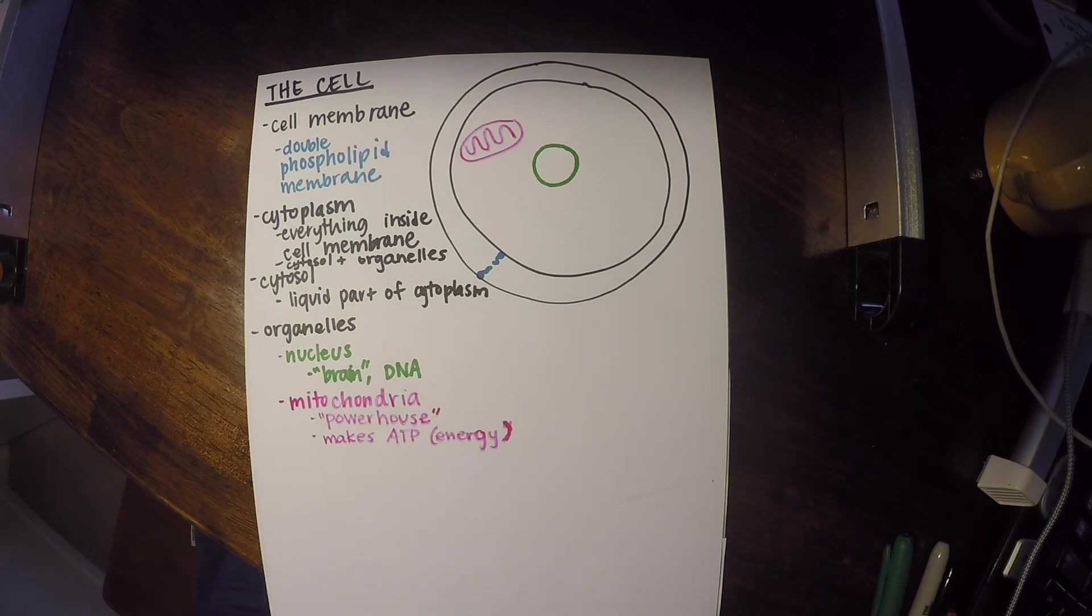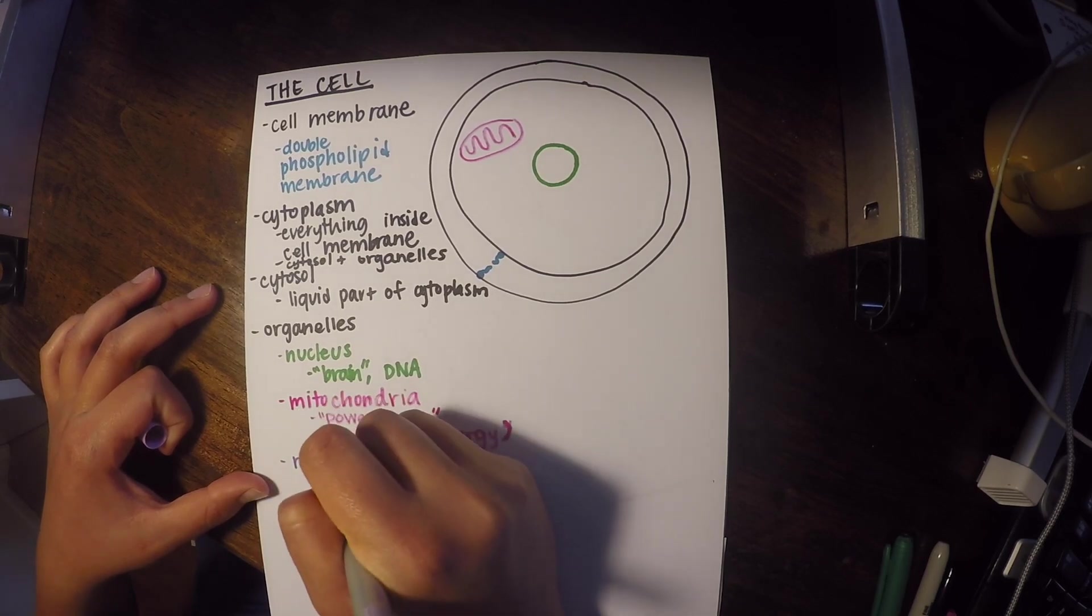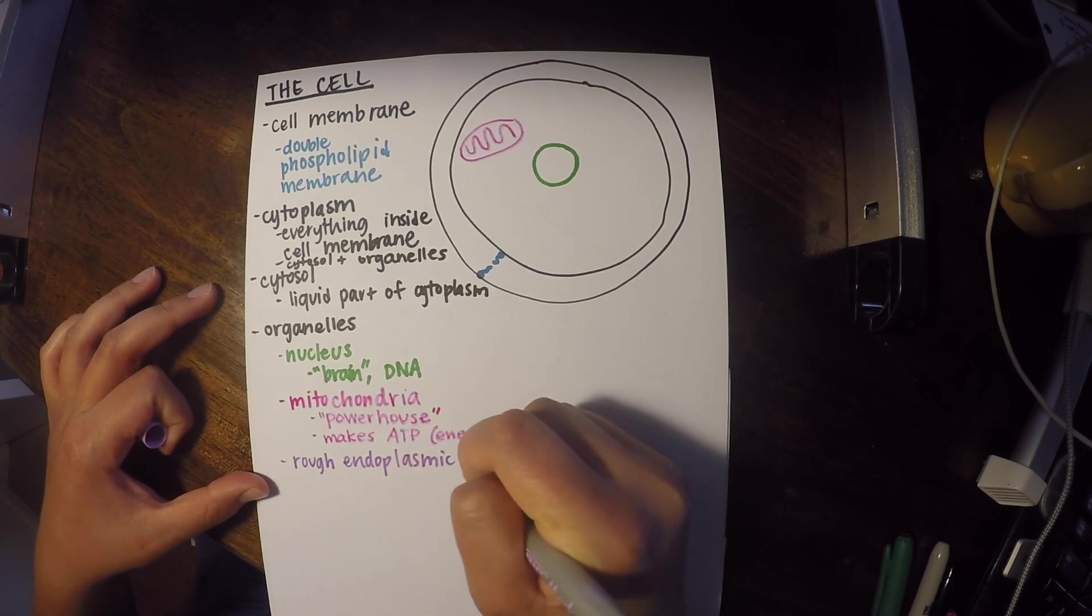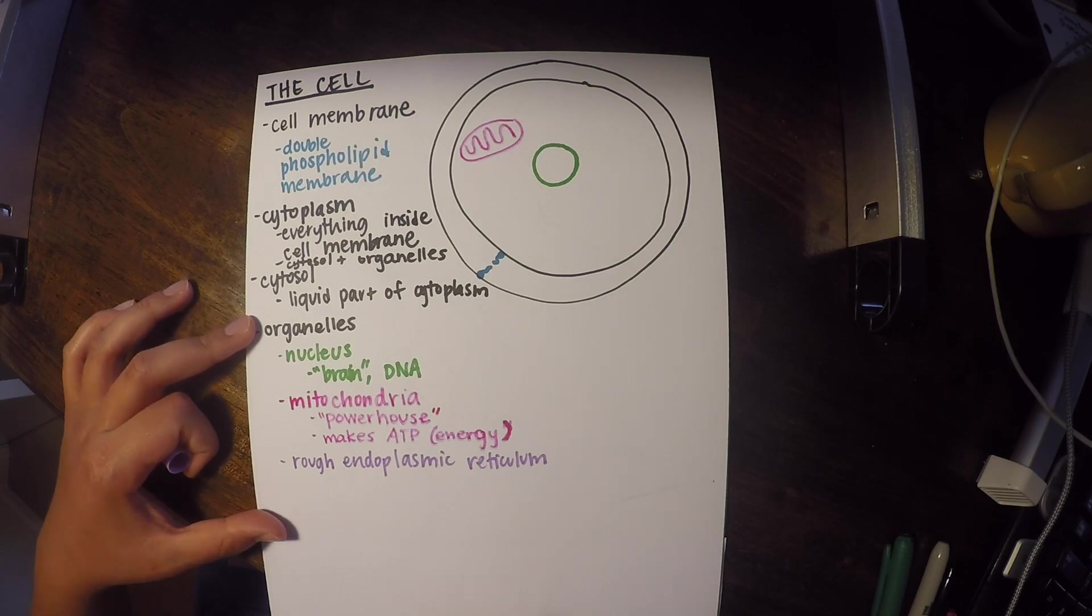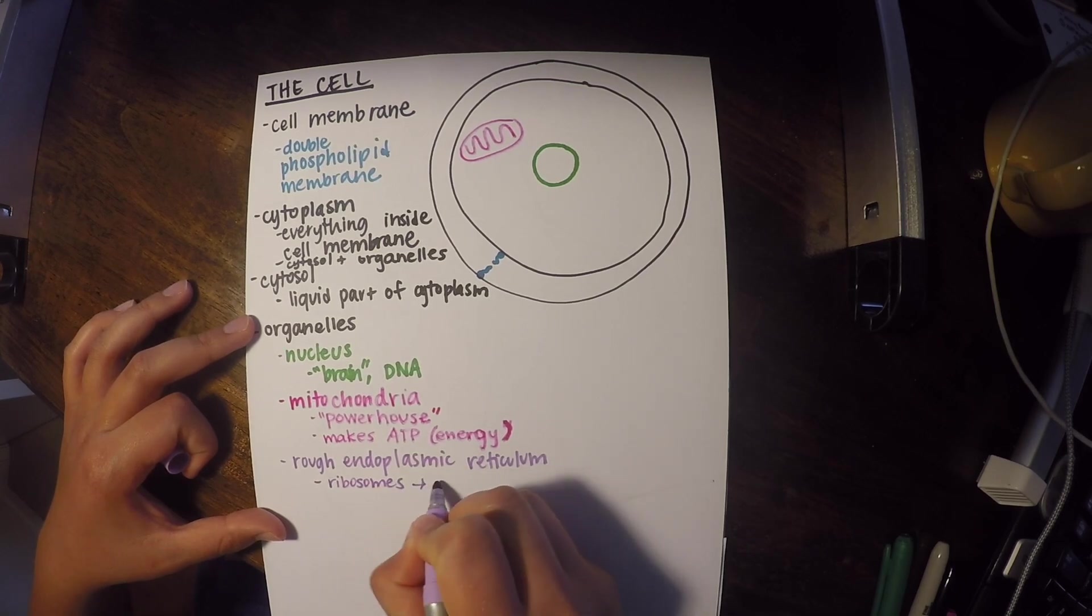Next we're going to have the smooth endoplasmic reticulum and the rough endoplasmic reticulum. So the rough endoplasmic reticulum is different because it has something called ribosomes, which are little spherical structures. And what those ribosomes do is they make protein.